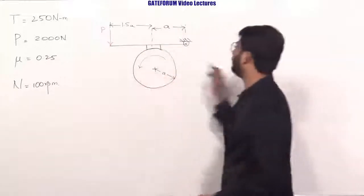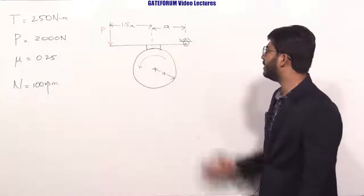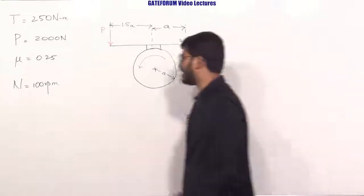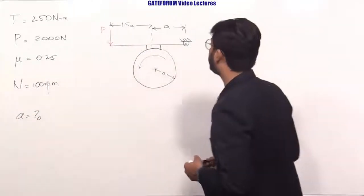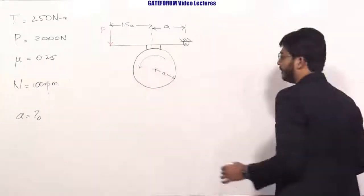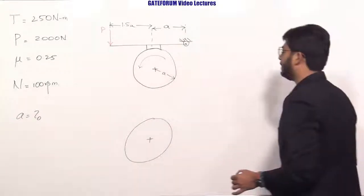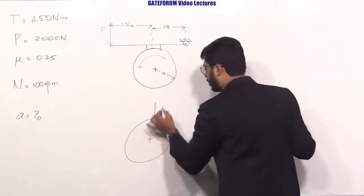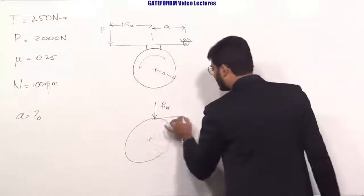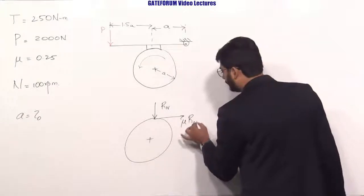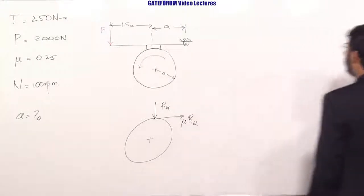The data given: torque = 250 N·m, applied force P = 2000 N, coefficient of friction μ = 0.25, speed = 100 RPM. We need to compute the value of A — the brake is designed with respect to this A parameter. Coming to the free body diagram, this brake will be undergoing rotation. There will be a normal reaction R_n, and in the direction of rotation the friction force μR_n will act. This gives the FBD of the shoe.